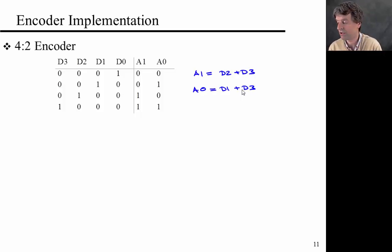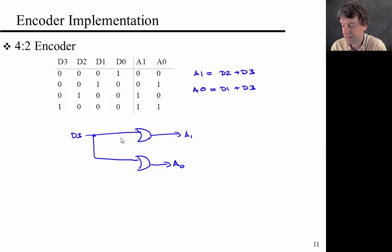So the circuit diagram that you could draw here is really simple. It's just two OR gates. Here this is A1, this is A0, the D3 input is shared, and then here you have D2 and here you have D1. So that's an encoder.